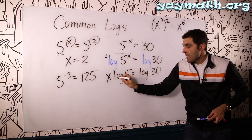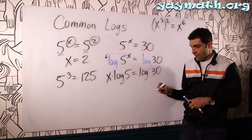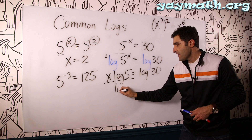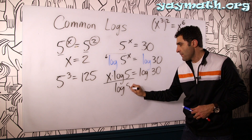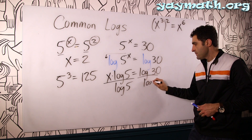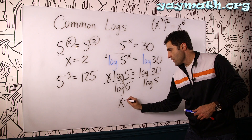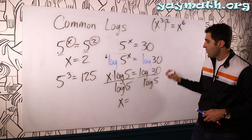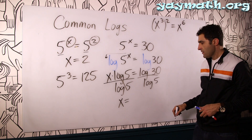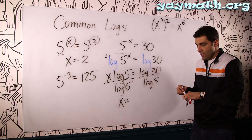The good news is now that x is alongside log 5. In order to isolate x, we divide both sides by log 5. That cancels, and x equals whatever log 30 divided by log 5 is.